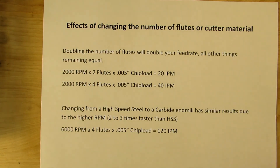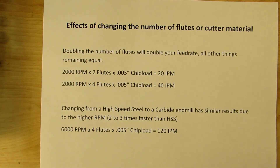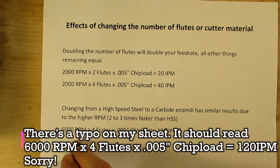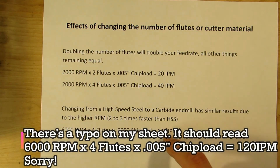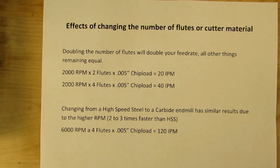Switching from a high-speed steel end mill to a carbide end mill has similar benefits, since carbide can run at a much higher SFM — typically two to three times faster than HSS, especially with coolant. If everything else is equal and you use 6,000 RPM instead, with four flutes and a five-thousandths chip load, you're up to 120 inches per minute, finishing your part much faster. So going to a four-flute or carbide cutter lets you machine faster and make more money.